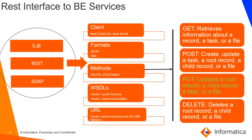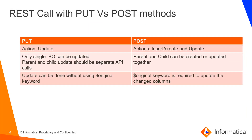For REST calls, GET retrieves information, POST can create or update, PUT is only used for update, and DELETE is for deleting records. The key difference between PUT and POST: PUT is for update only, whereas POST is for insert/create and update. With PUT, you can update only a single view. If you need to update parent and child in one API call, you must use POST.